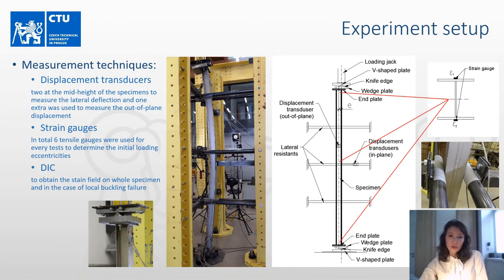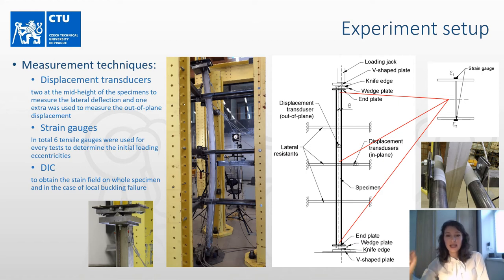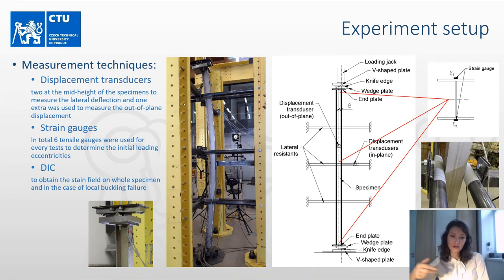During the experiments, two displacement reducers were placed at the mid-height of the specimens to measure the lateral deflection, and one extra was used to measure the out-of-plane displacement. In total, six strain gauges were used for every test — two near each end plate and two at the mid-height of the specimens, always in the middle of the flange. The readings from the strain gauges were used to determine the actual loading eccentricities. Additionally, a digital image correlation (DIC) system was used to obtain the whole strain field on the specimen surface.